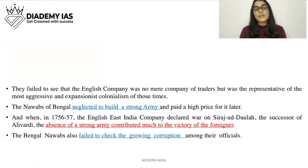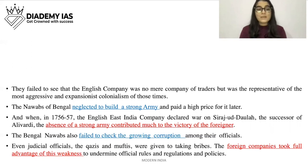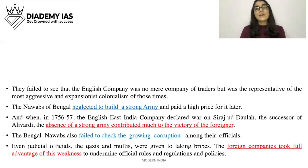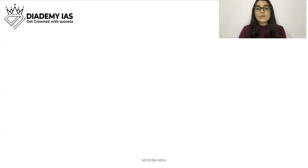The Bengali Nawabs also failed to check the growing corruption among their officials — even judicial officials, the qazis and muftis, were given to taking bribes. The foreign companies took full advantage of this weakness to undermine official rules, regulations, and policies. While the Nawabs maintained considerable peace and law and order at one time, they were quite short-sighted regarding the trading companies and did not understand the threat they posed.